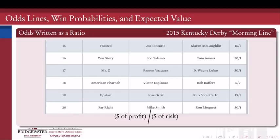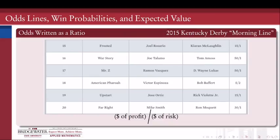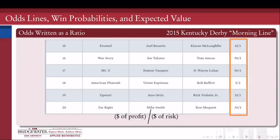The odds line is fundamentally written as a relationship between risk and reward — the amount of money you would wager on an outcome and the amount of profit that wager would pay out if that outcome came to pass. Here is a screenshot of the morning odds lines from the 2015 Kentucky Derby. There were 20 horses in that race, and this shows a few of them at positions 15 through 20. The horse name is in the first column, the jockey in the second, and the trainer in the third. The odds are in the last column.